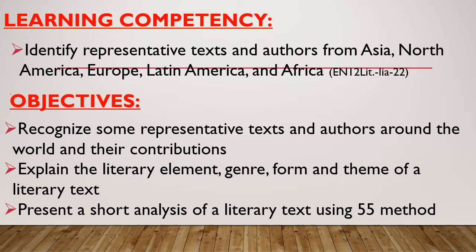From our learning competency — identify representative texts and authors from Asia, North America, Europe, Latin America, and Africa — springs forth the following objectives for this week: 1. Recognize some representative texts and authors around the world and their contributions. 2. Explain the literary elements, genre, form, and theme of a literary text. And present a short analysis of a literary text using the 5-5 method.